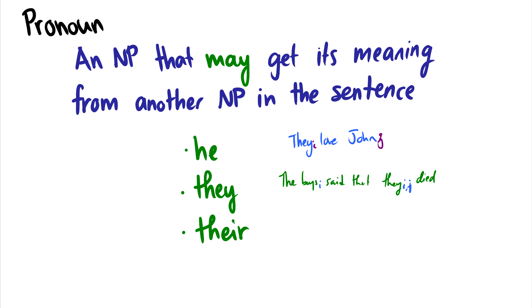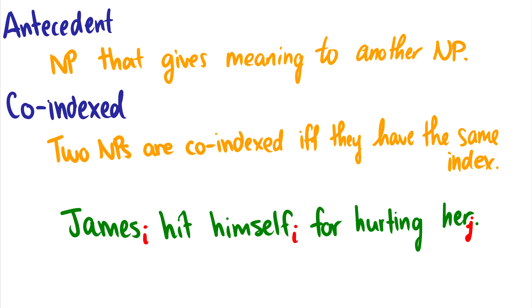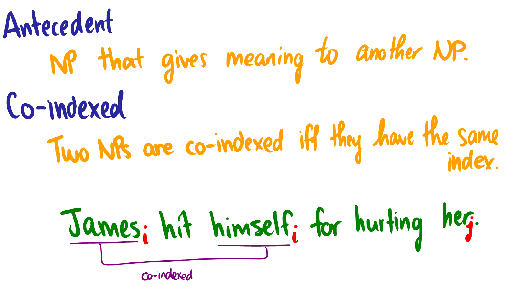There are some other terms we need to know. One is the antecedent — this is the NP that gives meaning to another NP. Then there's the word 'co-indexed': two NPs are co-indexed if they have the same index. So in the sentence 'James hit himself for hurting her,' James and 'himself' are co-indexed because they both have the subscript I. And James is the antecedent of 'himself,' because James gives meaning to the word 'himself.' 'Her' is not co-indexed with anything and does not have an antecedent in the sentence — so 'her' just refers to someone else in the discourse and we don't know who.